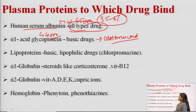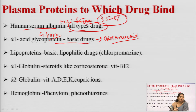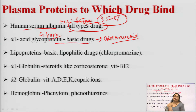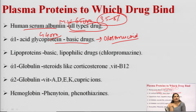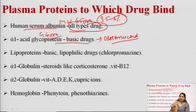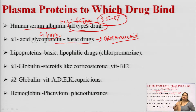The second type of plasma protein is alpha-1 acid glycoprotein (AAG), also known as orosomucoid. It has a molecular weight of 44,000. Basic drugs such as imipramine, amitriptyline, nortriptyline, quinidine, and propranolol can bind with AAG.